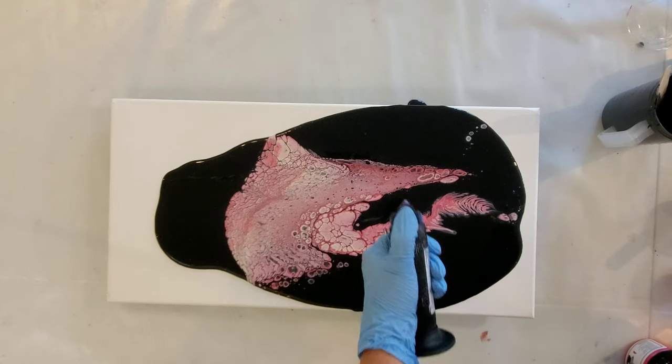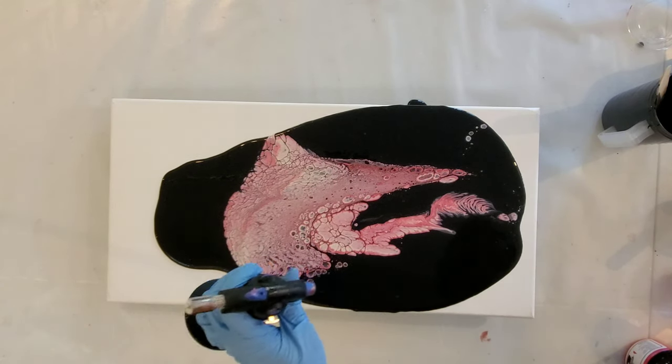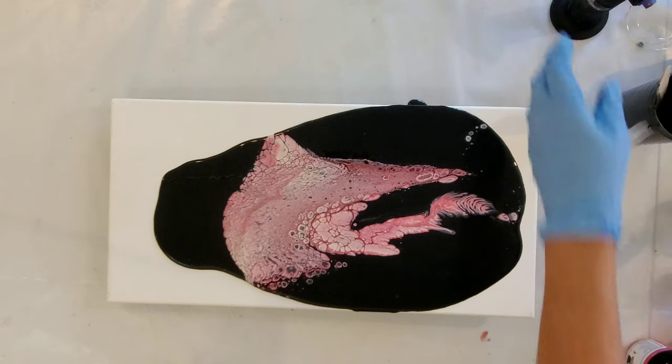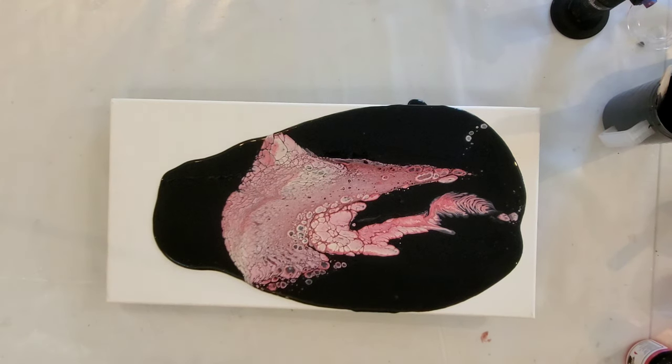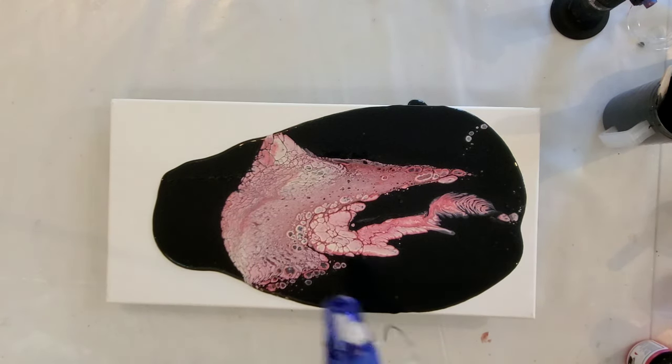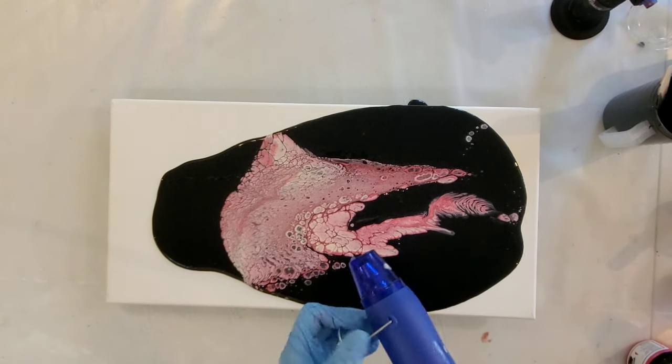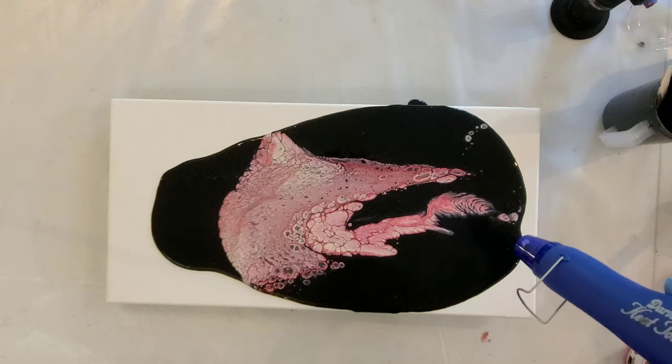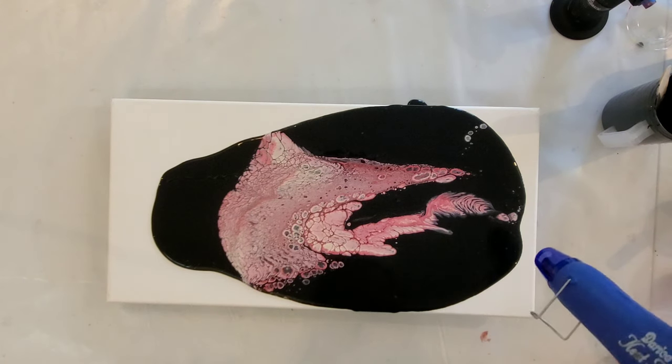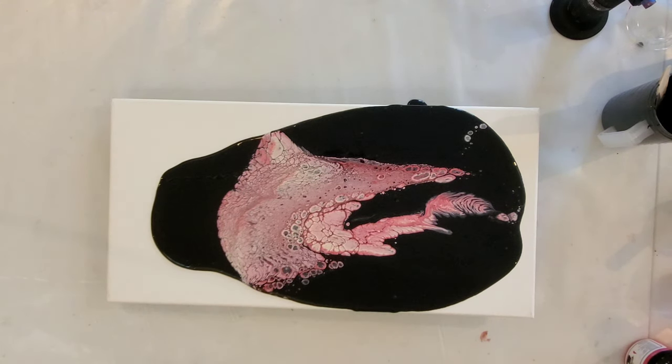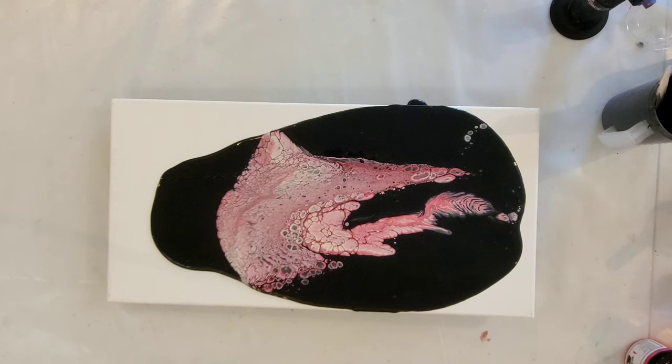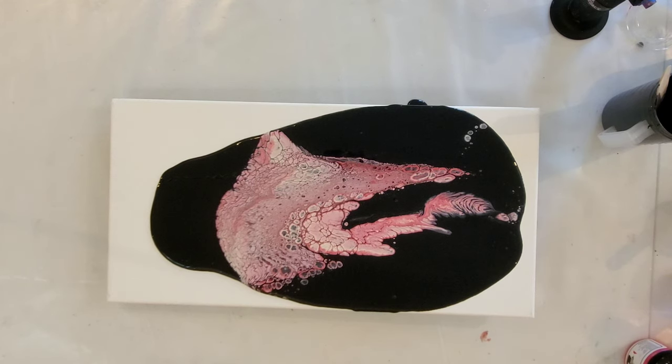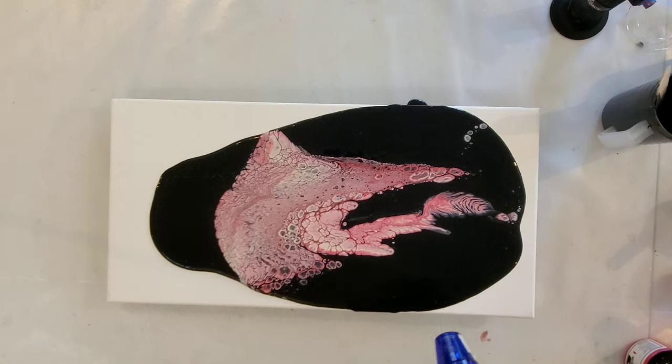Now you can use your heat gun to get rid of bubbles, or you can use a torch. Now that was using a torch, this is a heat gun. This is like for scrapbooking. I use this sometimes if I'm doing embossing, but for paint it actually helps to heat the paint and let the bubbles come up through. So let's do that.